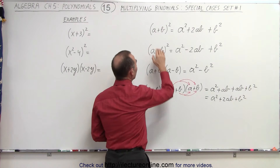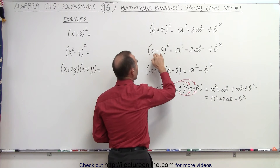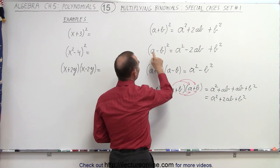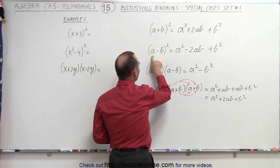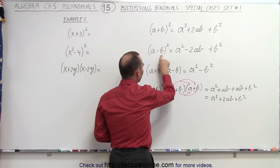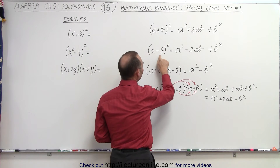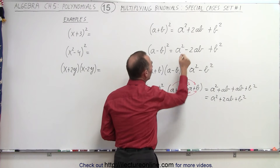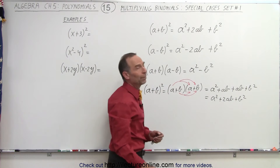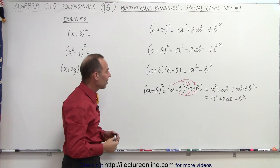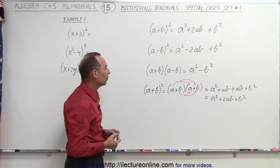Whether it's a plus b or a minus b, it makes no difference for the structure. You get the first term squared plus the last term squared, plus twice the product of the two terms — which for a minus b gives you minus 2ab. So it works exactly the same for a minus b.